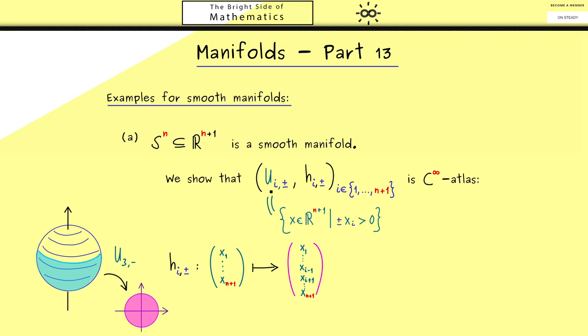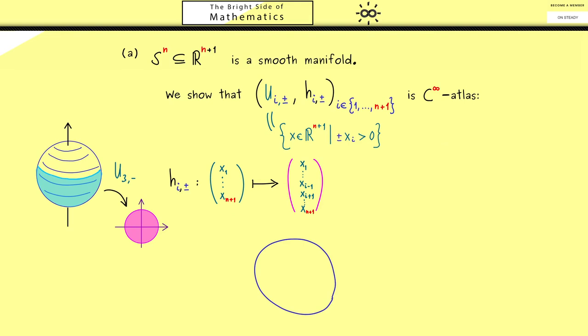In other words now we have to take two charts. And maybe let's stay with the visualization in R³. So now what we do is that we take one set u_i^+ and another one u_j^+. And then we are interested in the overlap in the intersection of both sets. And now for example we could imagine that u_i^+ is the northern hemisphere which means u_3^+. On the other hand the other set could be u_1^+.